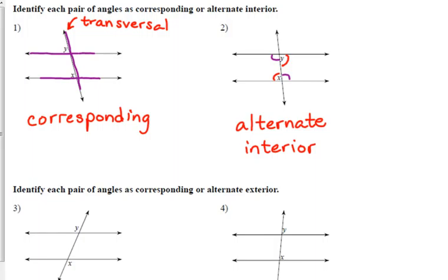We could have also labeled quite a few other corresponding angles in the first one. I'll go ahead and do that. These angles would be corresponding, these are corresponding, and these are corresponding. So I labeled them with the same numbers to show what they match up with.